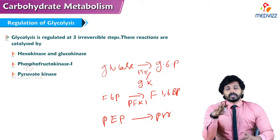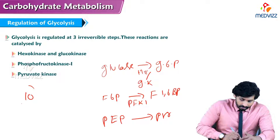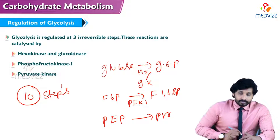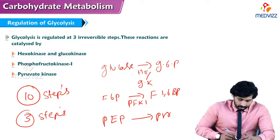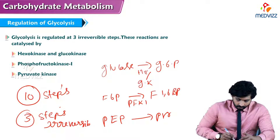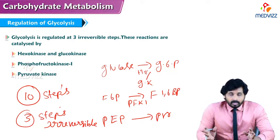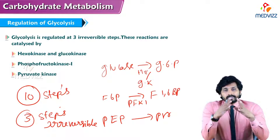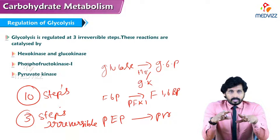Out of the total ten steps in glycolysis, three steps are irreversible and the rest are reversible. These three irreversible steps regulate glycolysis.